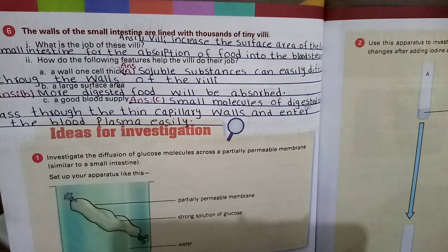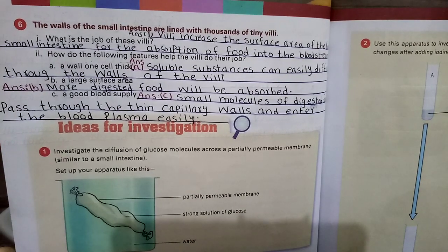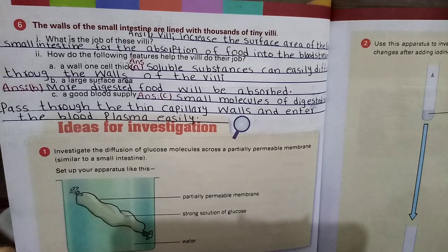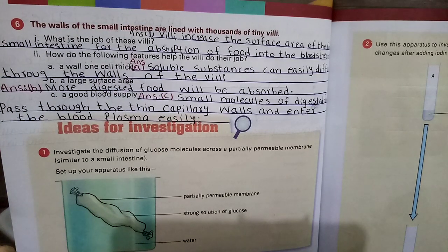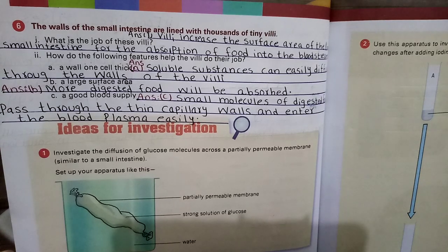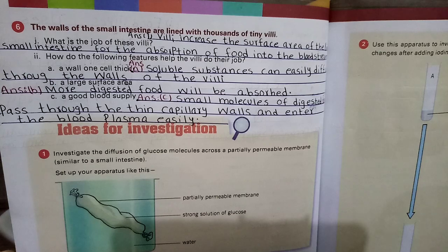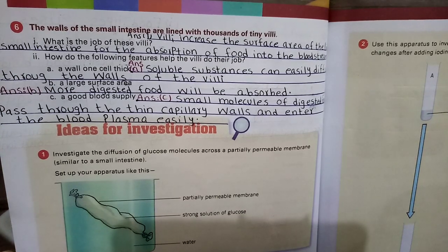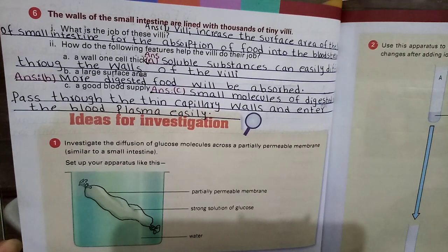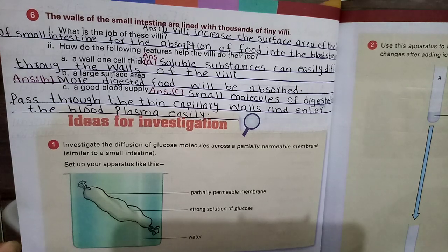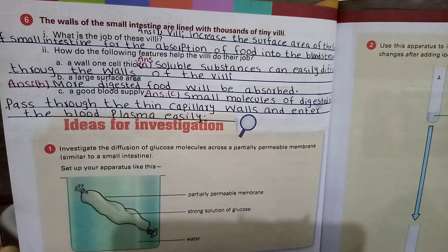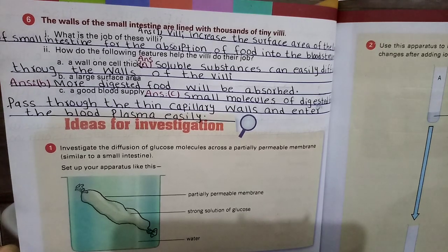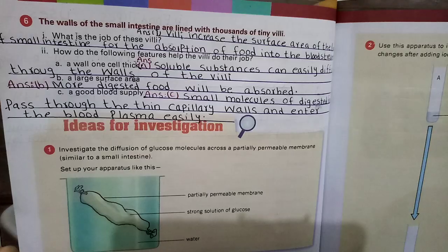Soluble substances can easily diffuse through the one-cell-thick wall of the villi. Large surface area: it provides a bigger surface area so that more digested food will be absorbed. Good blood supply: small molecules of digested food pass through the thin capillary wall and enter the blood plasma, which then carries energy to different parts of the body so that all organs work properly.